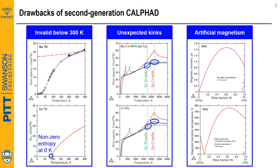Third, the magnetic model fails for systems containing elements having different magnetism. For example, BCC chromium is antiferromagnetic, while BCC nickel is ferromagnetic. The second generation CALPHAD not only fails to reproduce the experimental magnetic transition temperature and magnetic moment, it even predicts magnetism for non-magnetic compositions.